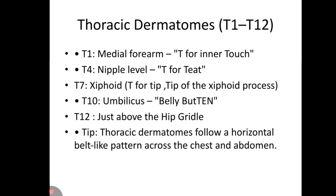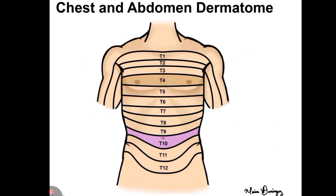T12 is just above the hip girdle. A tip to remember the thoracic dermatomes: they follow a horizontal belt-like pattern across the chest and abdomen, which makes them easier to remember. Here is the horizontal pattern of the thoracic dermatomes.